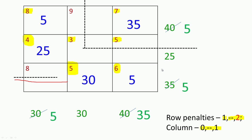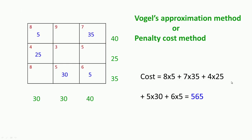We now have a feasible solution: row sums equal to 40, 25, and 35; column sums equal to 30, 30, and 40. All values are greater than or equal to 0, with 5 positions having positive values. The cost associated with this solution is 8×5 plus 7×35 plus 4×25 plus 5×30 plus 6×5, which equals 565. Northwest corner gave 625, the minimum cost method gave 590, and this method — called the penalty cost method or Vogel's approximation method — gives a cost of 565.